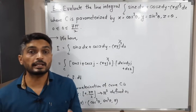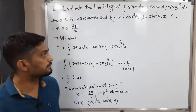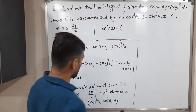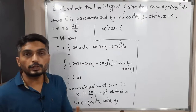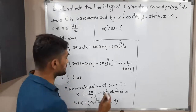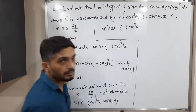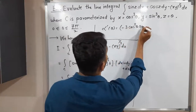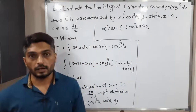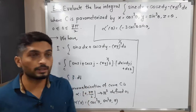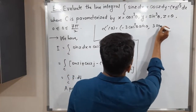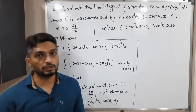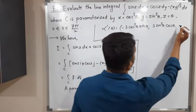After that, we will find the necessary things, that means alpha-dash of theta and f of alpha of theta. So alpha-dash of theta — component-wise derivative: derivative of cos³θ is 3cos²θ, and by chain rule, derivative of cos θ is minus sin θ, so we write minus 3cos²θ sinθ. Next, derivative of sin³θ is 3sin²θ, and by chain rule, times cos θ. And derivative of θ is 1.